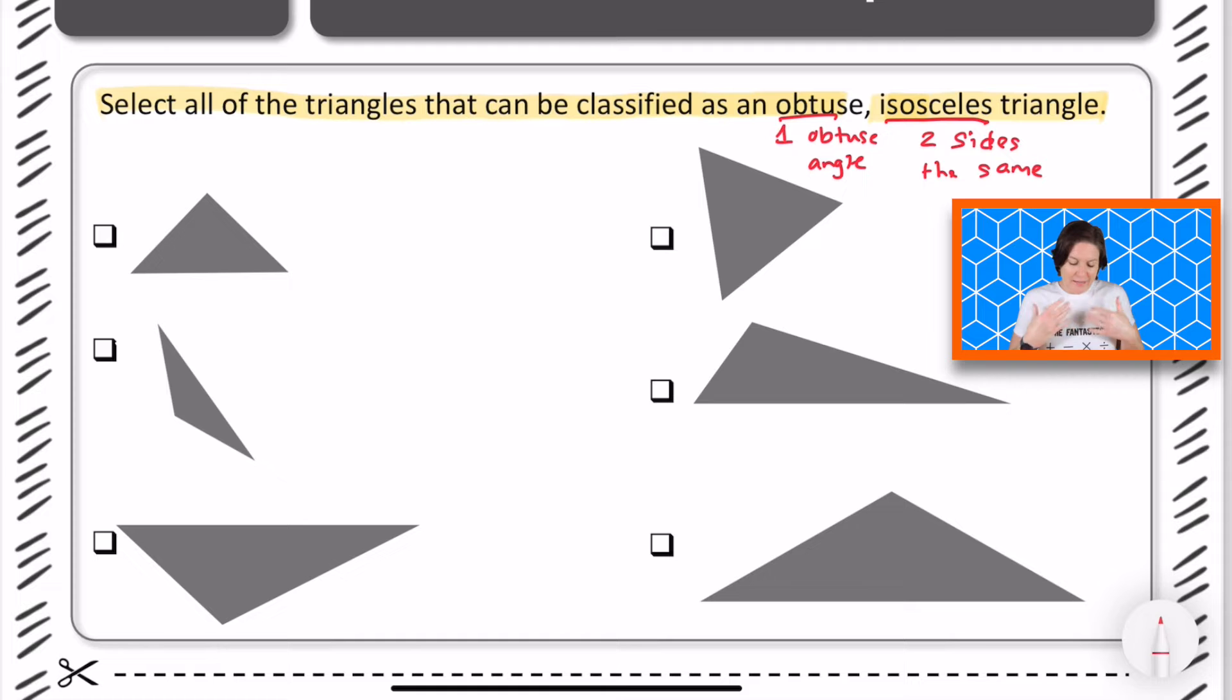The way that I'm going to tackle this is to look for the obtuse angle first. So we're going to look at each one of these triangles and we're going to try to see if we can identify an obtuse angle. So an obtuse angle is wider than a right angle. So if we have a square corner and we measure it up, we line up our angles and it looks wider, we've got an obtuse angle.